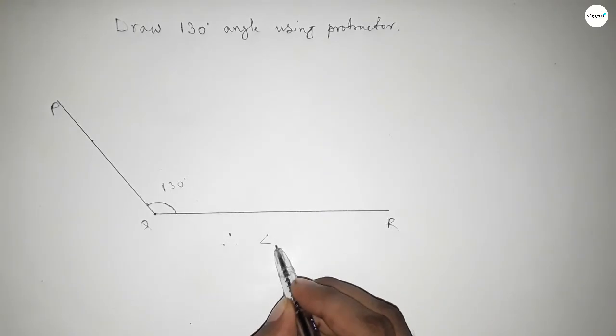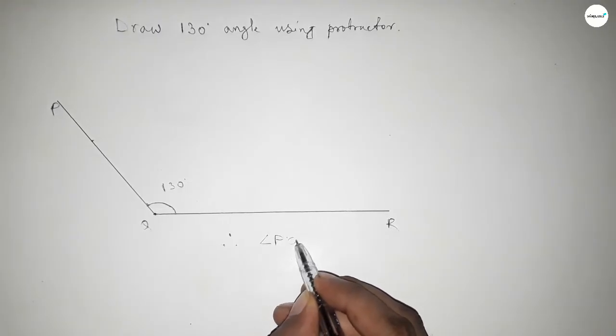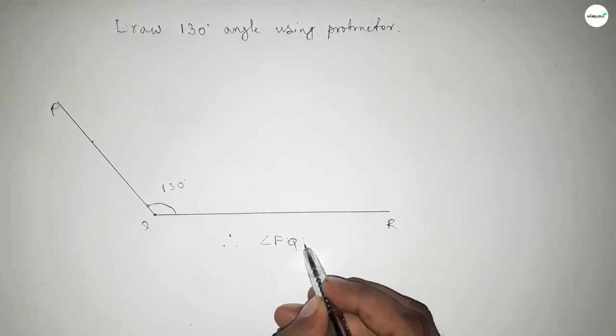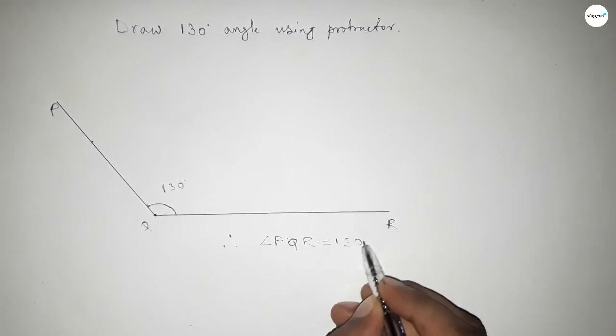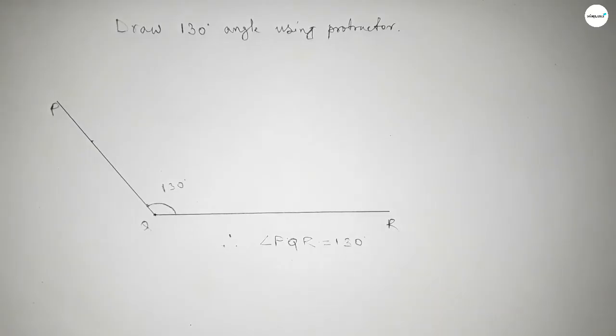Therefore, angle PQR equals 130 degrees. That's all. Thanks for watching. If this video is helpful to you, please share it with your friends. Thanks for watching.